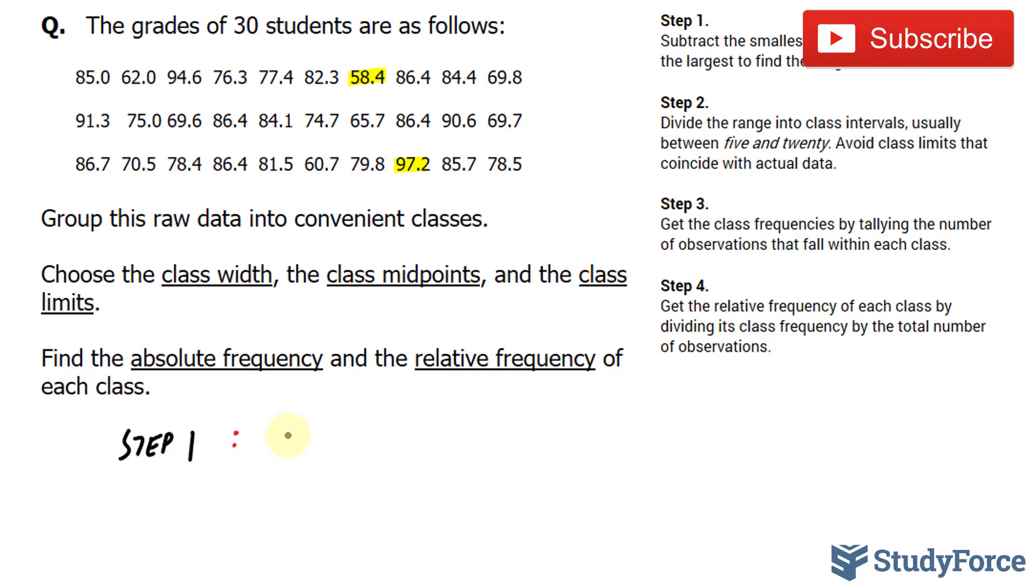Therefore, the range will be 97.2 subtracted from 58.4. Using your calculator, you'll find out that the answer is 38.8. That covers step 1.